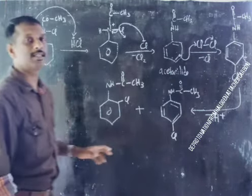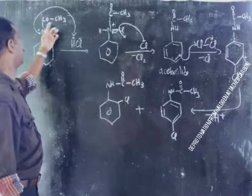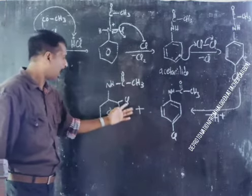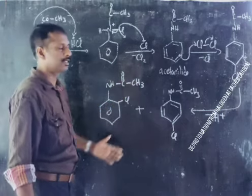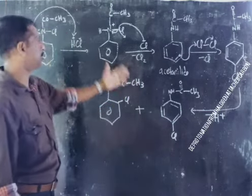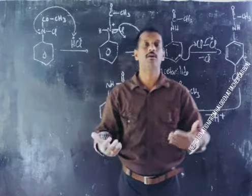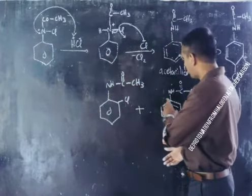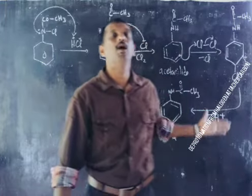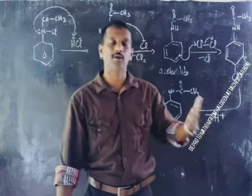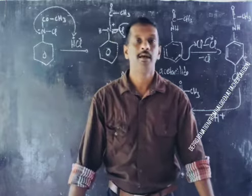In the Orton rearrangement, N-haloacetanilide or N-halo-arylamide is converted into ortho and para-halo-arylamide. The usefulness of the Orton rearrangement is the preparation of ortho and para-halo-arylamide — particularly ortho and para-haloacetamide, or ortho and para-haloacetanilides. Thank you.